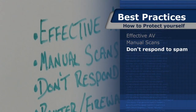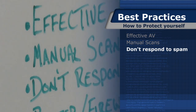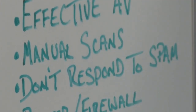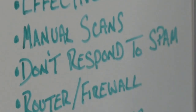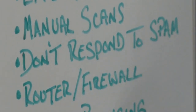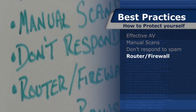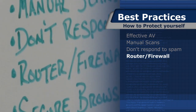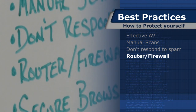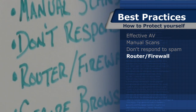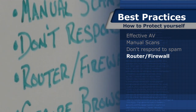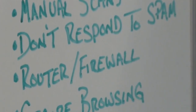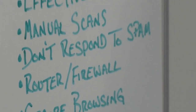Also, don't respond to spam. Once you respond to any spam, the people pushing it out know they've got a live address and that someone is reading the email. Regarding routers and firewalls, this is a very important part. When you connect your machine directly to your broadband connection, your machine can actually be directly accessed. By using a router or firewall to add a layer between yourself and the public internet or your ISP, your system is significantly safer.